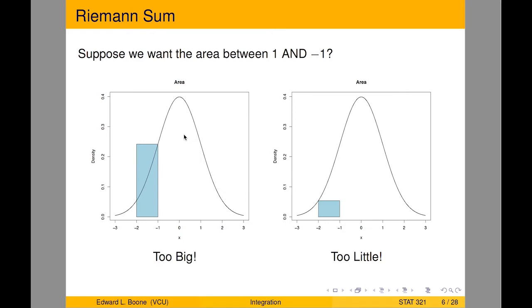Suppose we want the area between minus two and minus one. You can see the picture here, I could put just a rectangle from minus two to minus one, and have it at the highest point of the function in that range. If you notice, all of this area here is too much. So our area is too big.